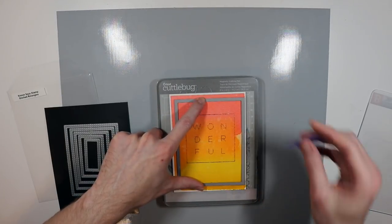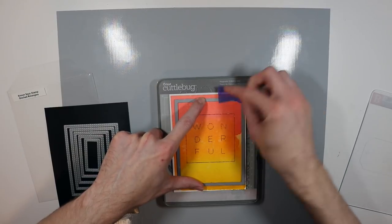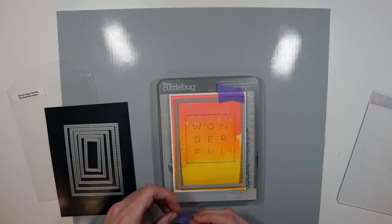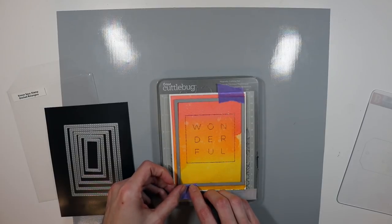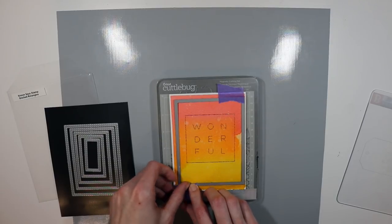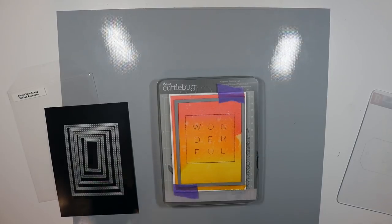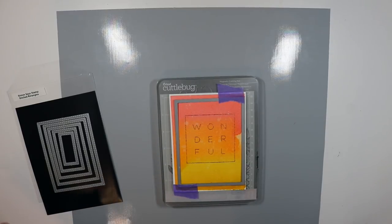Alright, I have my largest stitched rectangle die from Simon Says Stamp and I'm just going to put a little purple tape onto it to hold it into place. My die is very well loved and so it kind of warps a little bit. So I have to add a little bit of extra encouragement to stay, to tell it to stay where I want it to. These are the stitched rectangle dies from Simon Says Stamp and I'm going to put this through my Cuttlebug and get this die cut.